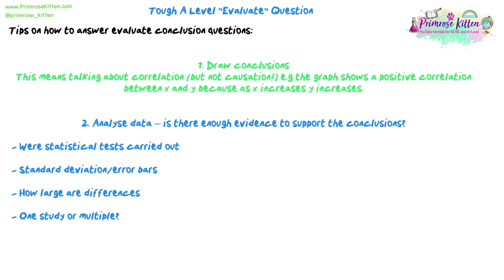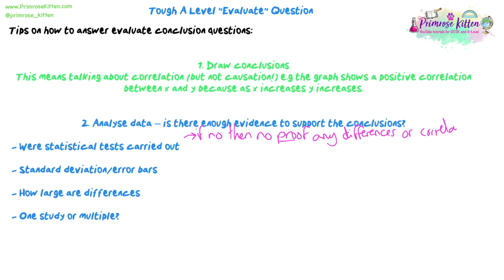For these types of answers, we need to say yes and no — we give yes points supporting the conclusion and no points against it, so there will be for and against points. Look at the data to find your fors and againsts. Was a statistical test carried out? If there isn't one, there's no proof of any differences and you can't be 100% certain, so that can be a no point.